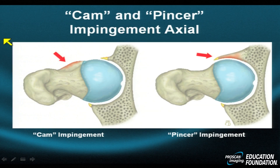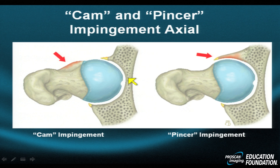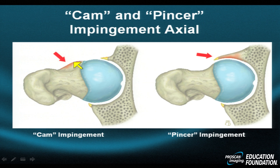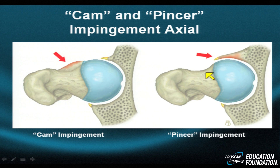The first slide demonstrates two major differences between cam impingement on the left and pincer impingement. In cam impingement, many but not all cases are associated with alteration in the transition from the head to the neck, so that the normal graceful tapering between the two is lost and a bump ensues. That bump could be developmental or acquired, and in certain positions like hip flexion it rams into the anterosuperolabrum and creates problems.